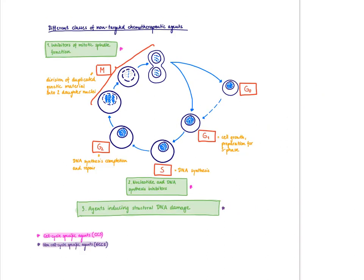So how can we target fast proliferating cells? That's what these non-targeted chemotherapeutic agents do. There are two possibilities: either we damage one specific phase of the cell cycle, for example S phase or M phase, or we make such severe damage that it doesn't matter in which phase the damage occurs. Drugs that act in a specific phase are called cell cycle-specific agents, whereas drugs that act in any phase are called non-cell cycle-specific agents.